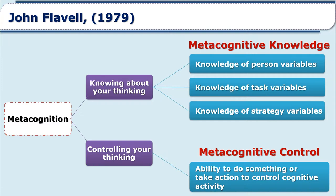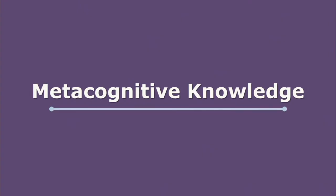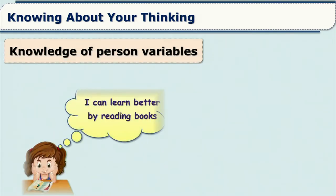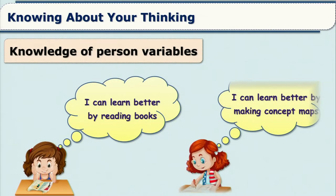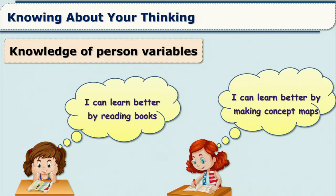What does metacognitive control mean? Metacognitive control is the ability to take action to control cognitive activity. Under metacognitive knowledge, first we will talk about knowledge of person variables. Knowledge of person variables refers to the general knowledge about how human beings learn and process information, as well as individual knowledge of one's own learning processes.